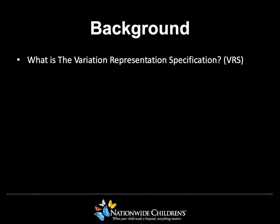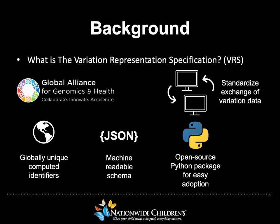To get started, let's cover what the variant representation specification, commonly referred to as VRS, is. VRS is a specification developed by the members of the Global Alliance for Genomics and Health for the standardization of the exchange of variation data. It suggests an algorithm for computing globally unique identifiers to promote consistent variation representation and sharing. Its current implemented schema supports JSON, which is a common machine and human-readable schema. Eventually, VRS will support additional schema types such as XML, OpenAPI, and GraphQL.